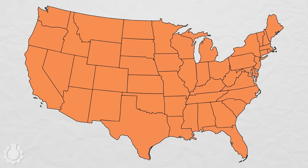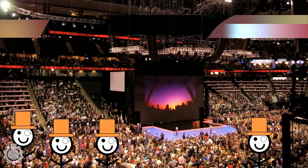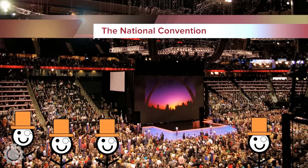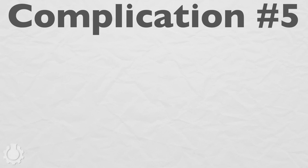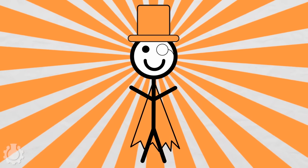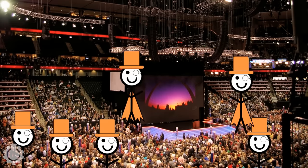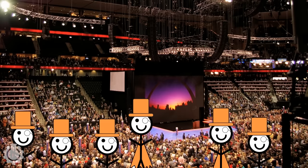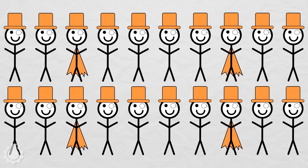Later in the year, when all the states have finished their primaries, the delegates travel to a huge gathering for their party called the National Convention. It's here that the official vote to select the party's nominee for president happens. But it's not just the delegates who do the voting — complication number five: superdelegates. Superdelegates are the top members of the party, such as congressmen and former presidents. They go to the National Convention not to represent the people, but to represent the current party establishment and can vote for whomever they want. Depending on the party, superdelegates might be up to 20% of the voters at the National Convention.